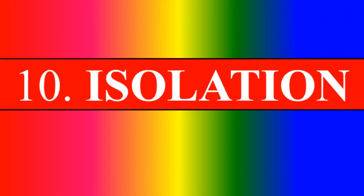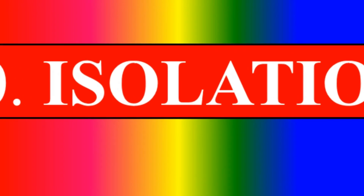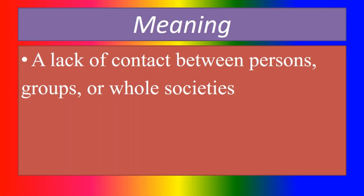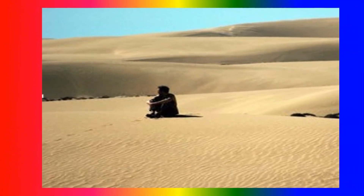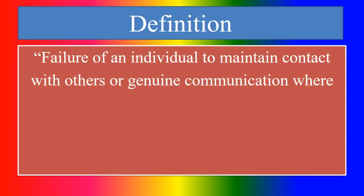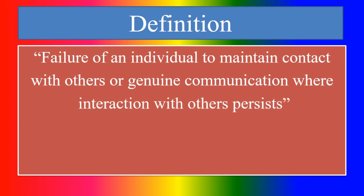Next section: Isolation — in detail. What is meant by isolation? A lack of contact between persons, groups, or whole societies. Can you define isolation? Failure of an individual to maintain contact with others or genuine communication where interaction with others persists.